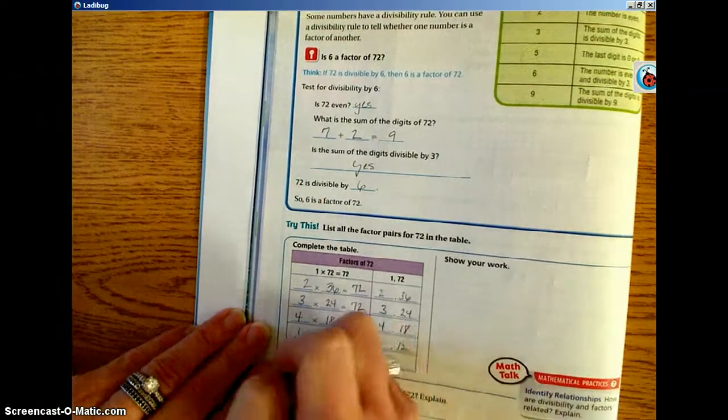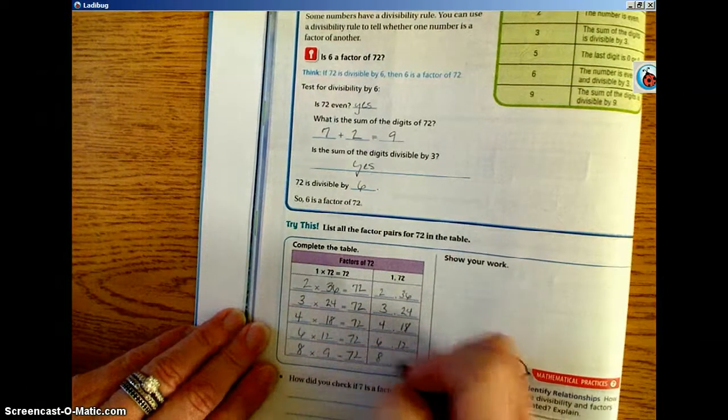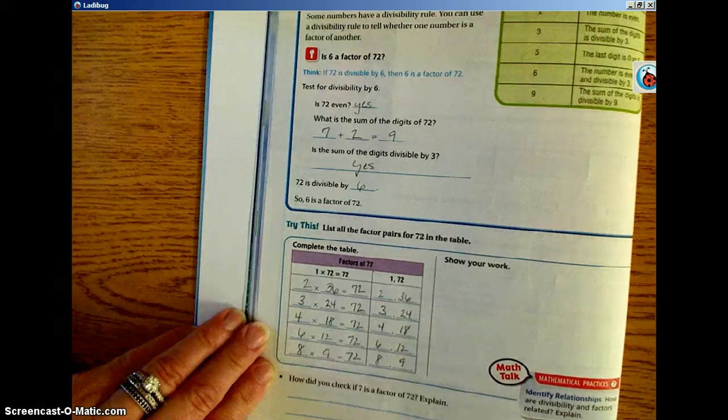And then the last one, 8 times 9 is 72. 8 and 9 would be our factor pair.